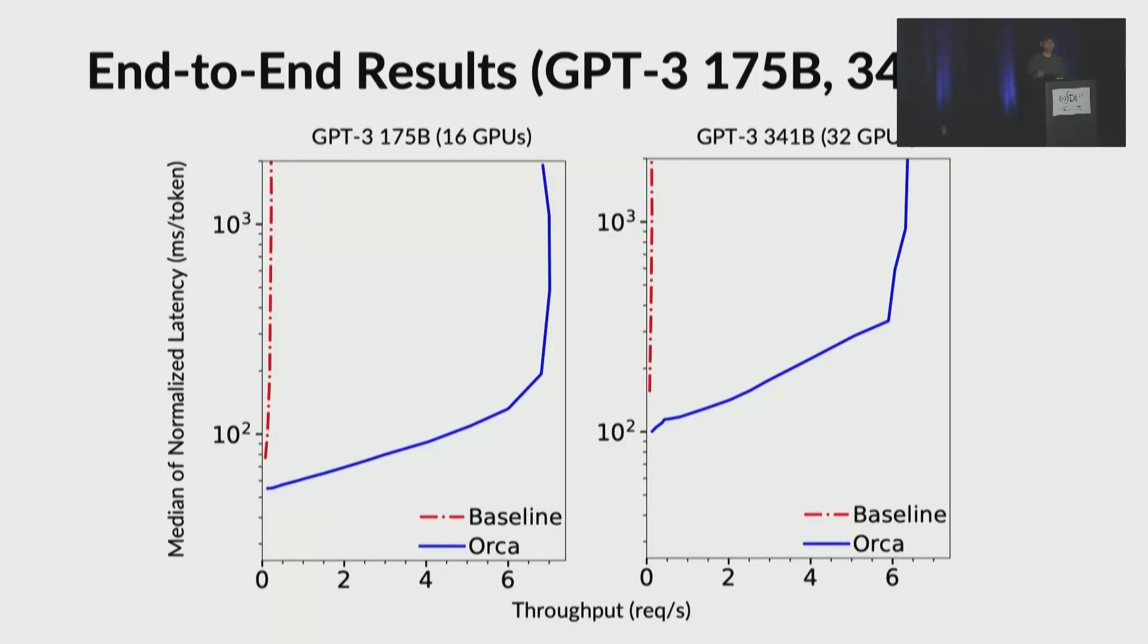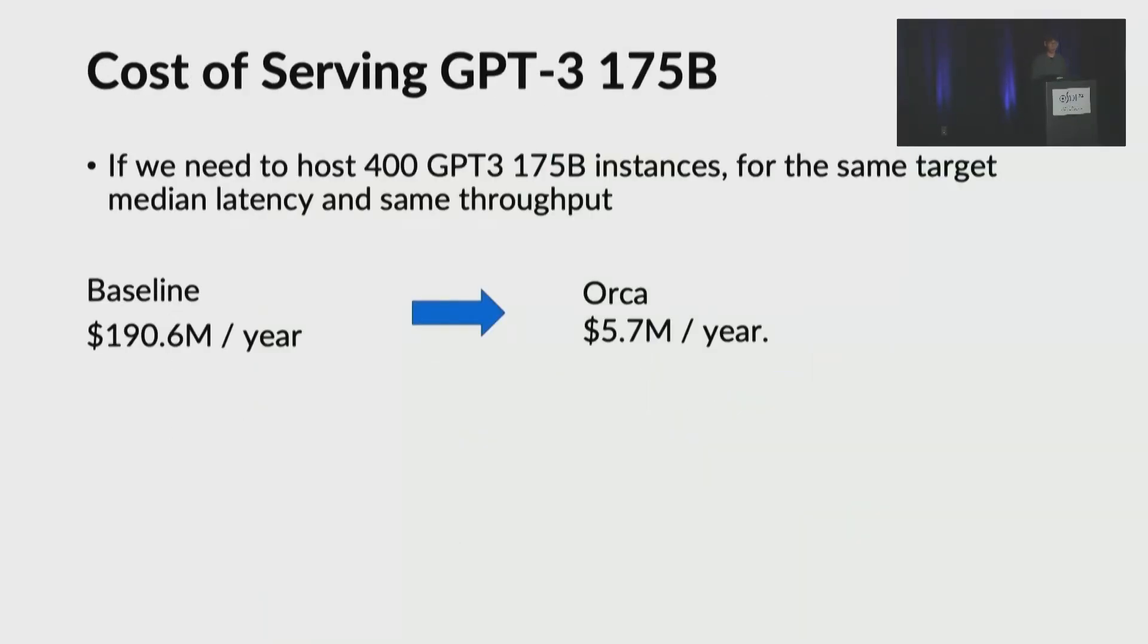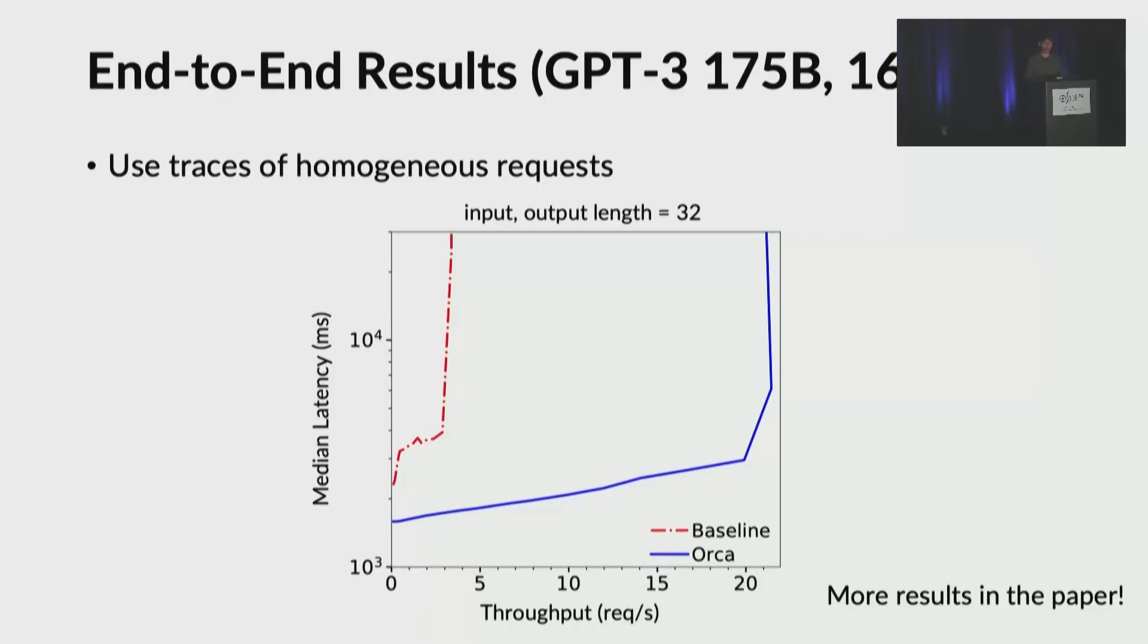For the given target median latency, Orca can serve GPT-3 175 billion with 36.9 times higher throughput than the baseline. As the model size becomes larger, we see even larger gains. So if we need to host 400 GPT-3 175 billion instances for the same target median latency and the same throughput, Orca costs only $5.7 million per year compared to the baseline. As you can see, that's a huge saving. We also ran experiments to see what would happen when the requests are homogeneous. Orca still outperforms the baseline significantly.